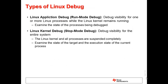There are two types of Linux debug: Linux application debug and Linux kernel debug. Linux application debug refers to debug visibility for one or more Linux processes while the Linux kernel remains running. Because of this, it is also referred to as run mode debug.